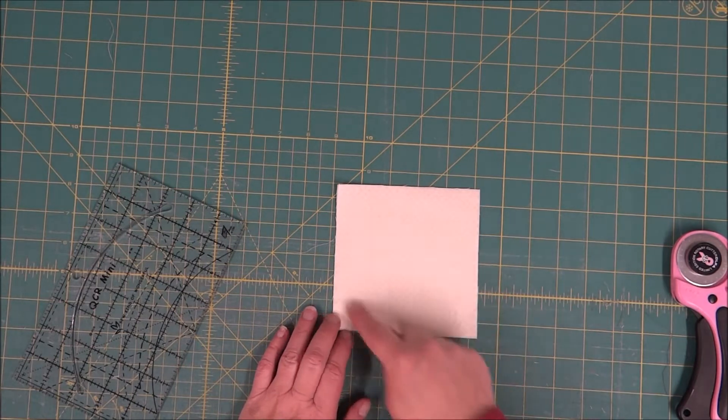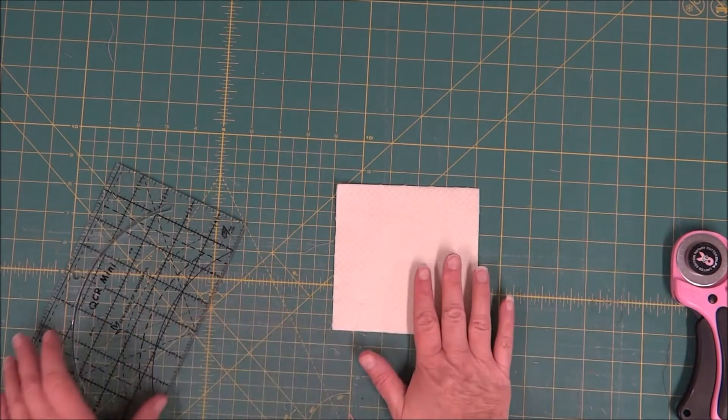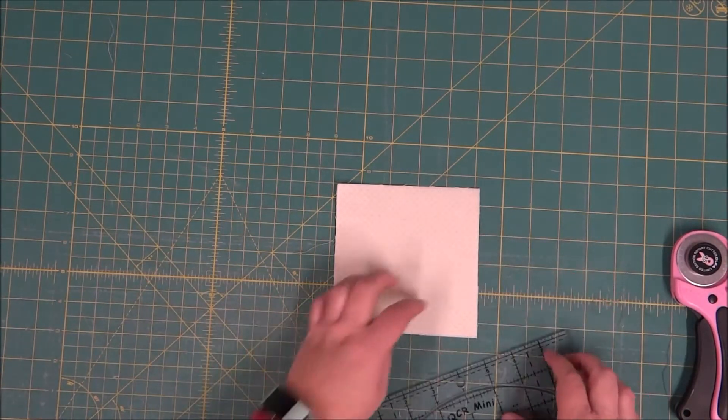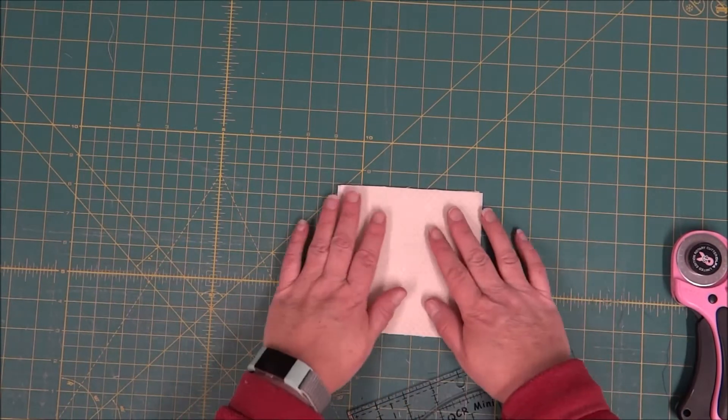I'm going to cut 5-inch squares, and then I'm going to use this square and cut both sides. I'm going to make sure the edges are lined up nicely.